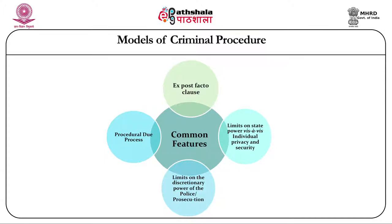The third commonality is limits on state power vis-à-vis individual privacy and security. Both models acknowledge that there are limitations on the powers of the government to investigate and apprehend persons suspected of committing crimes. For instance, an individual cannot be kept in custody as long as the investigating officer desires — there are statutory limitations and scrutiny of such actions for the purpose of protecting the individual's privacy and security.